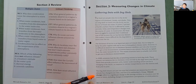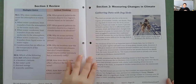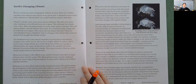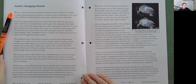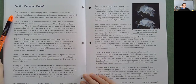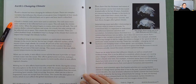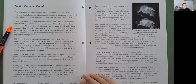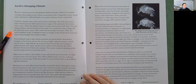Climate change refers to a significant change in the average weather in a location over 30 years or more, including changes in temperature, precipitation, or wind patterns. Earth's climate has been changing for millions of years, depending on how much solar radiation is reflected back to space versus absorbed. If Earth's climate cools, more snow and ice form, causing more solar radiation to be reflected, making the climate even cooler. When the planet begins to warm, snow and ice melt, exposing darker surfaces, so less solar energy is reflected, causing warming to increase. These are called feedback loops — a change in the climate that causes an impact that changes the climate further.